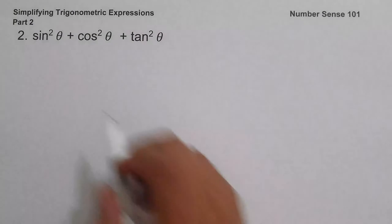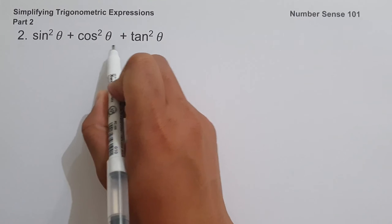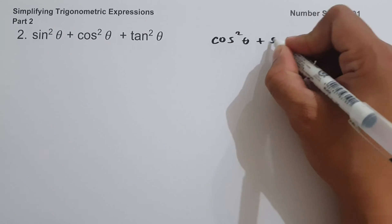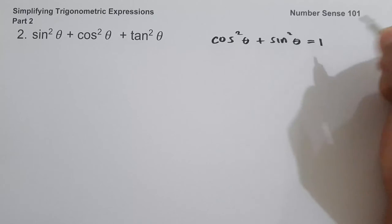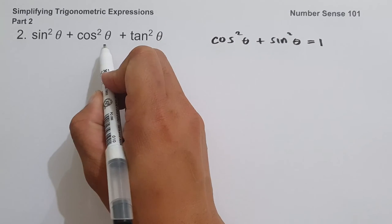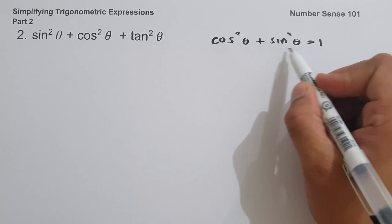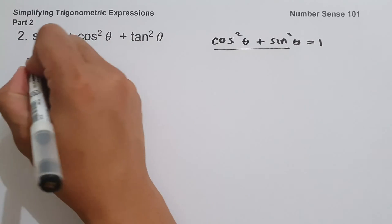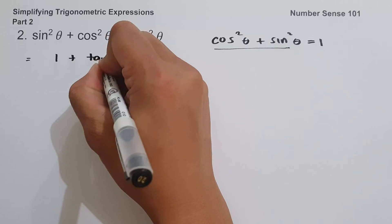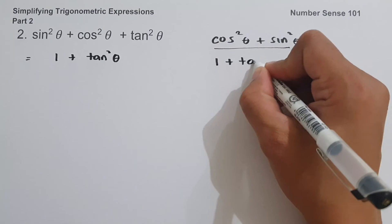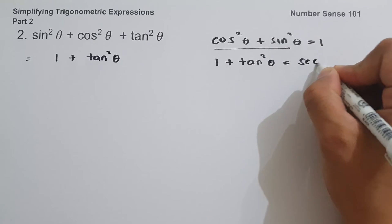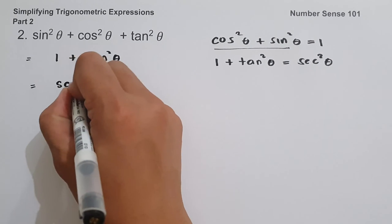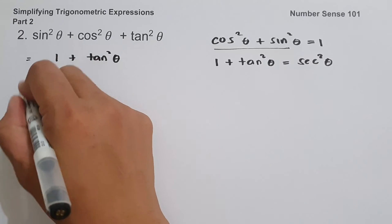On example number 2, we have sin²θ + cos²θ + tan²θ. We know that cos²θ + sin²θ = 1, so sin²θ + cos²θ is equal to 1. We can rewrite the expression as 1 + tan²θ, and 1 + tan²θ is equal to sec²θ. So the answer is sec²θ.